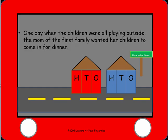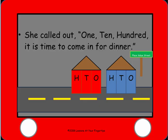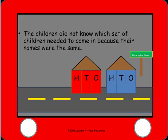One day when the children were all playing outside, the mom of the first family wanted her children to come in for dinner. She called out: one, ten, hundred — it is time to come in for dinner. The children did not know which set of children needed to come in because their names were the same.